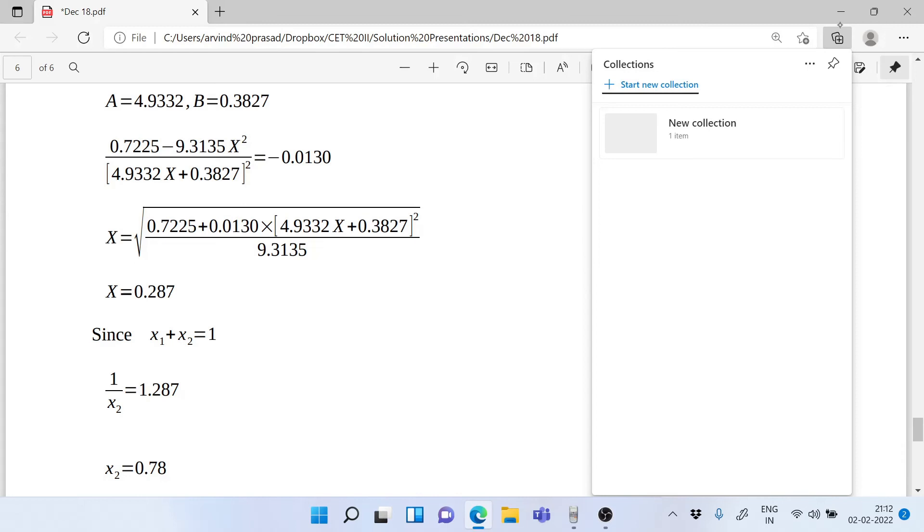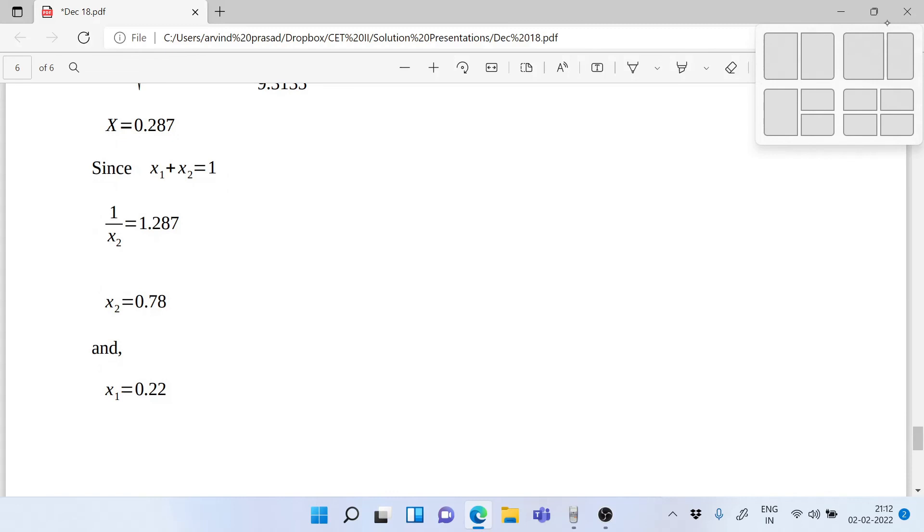Now you have x₁/x₂ as 0.287. So if you add 1 on both sides you have 1/x₂ because x₁ + x₂ = 1, and then you take the reciprocal of that. After you take the reciprocal you get 0.78, and 1 minus x₂ is x₁ which is 0.22.